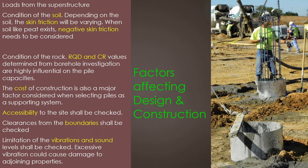Accessibility to the site is another factor — heavy machinery is required for pile construction, so there must be adequate access to the site and adequate space for machines to rotate and maneuver. Clearance from boundaries is also critical; due to space limitations, you may want to construct piles very close to boundaries, but the piling machine may not reach or may damage adjacent structures.